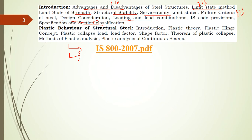From Module 1, expect questions on loading and load combinations (fourth question) and section classification (fifth question). This module has only theory questions — no design problems. Five or more questions can be generated from these few introductory topics alone. Be thorough with all the theory questions from this section.